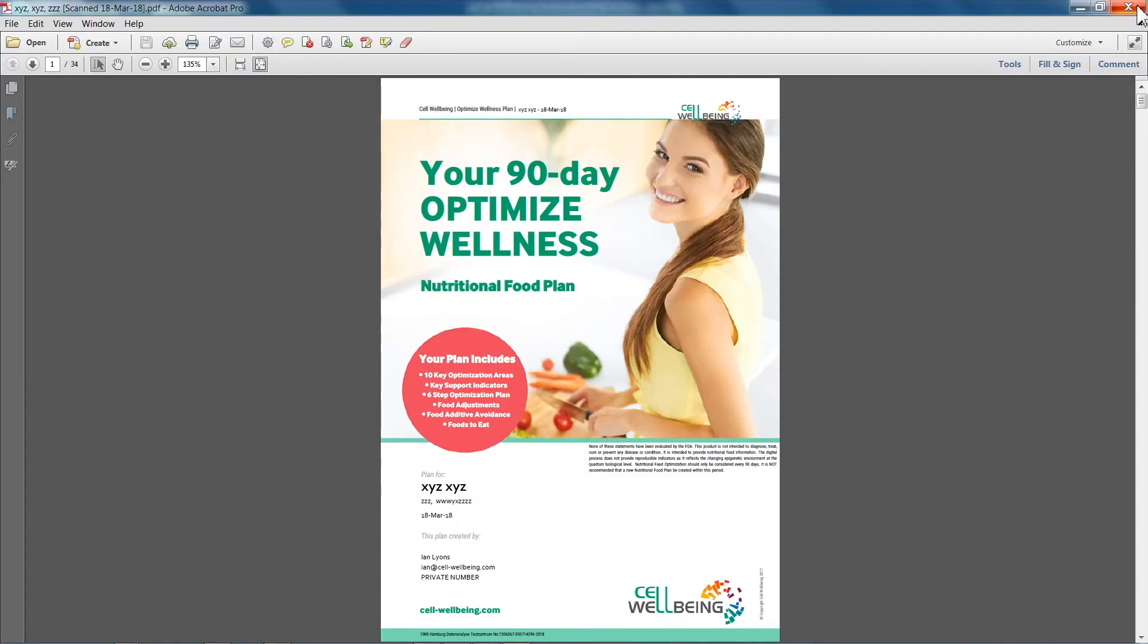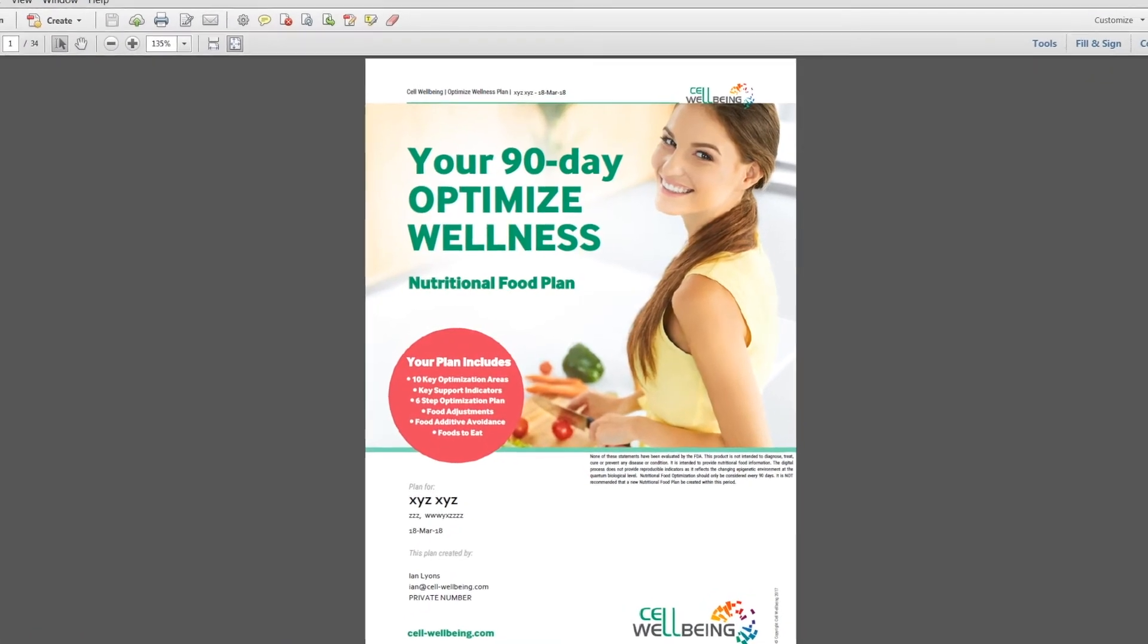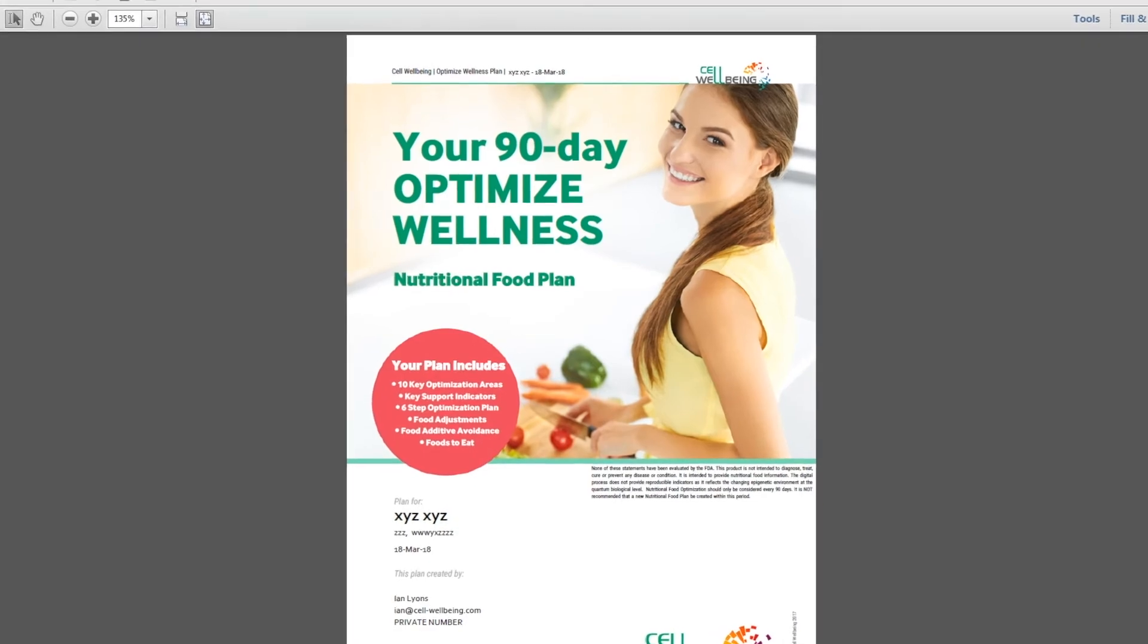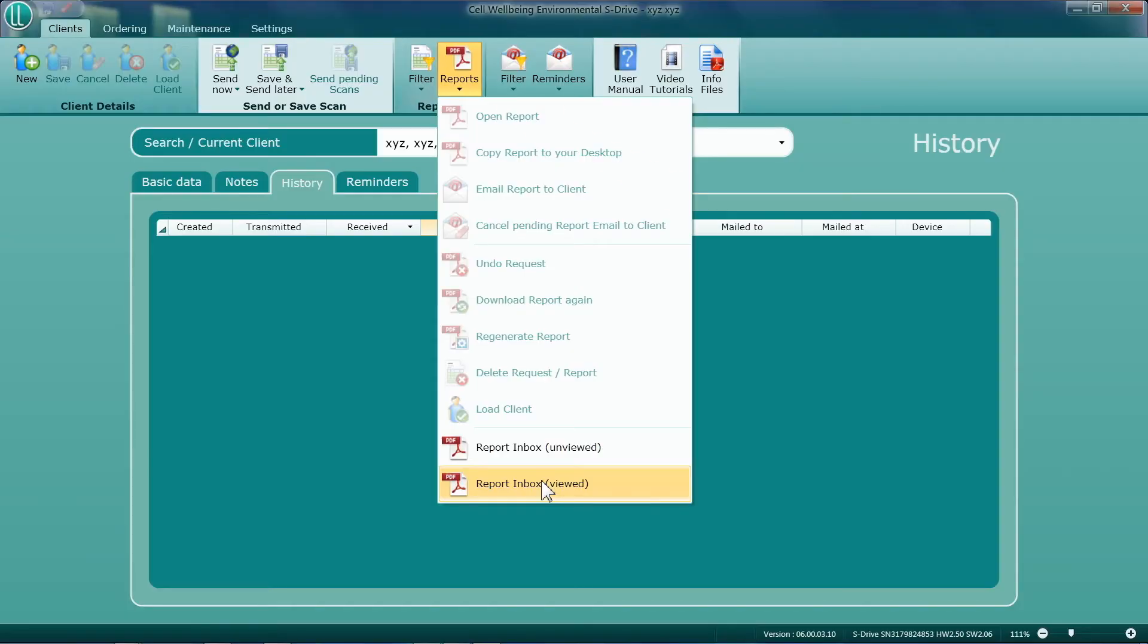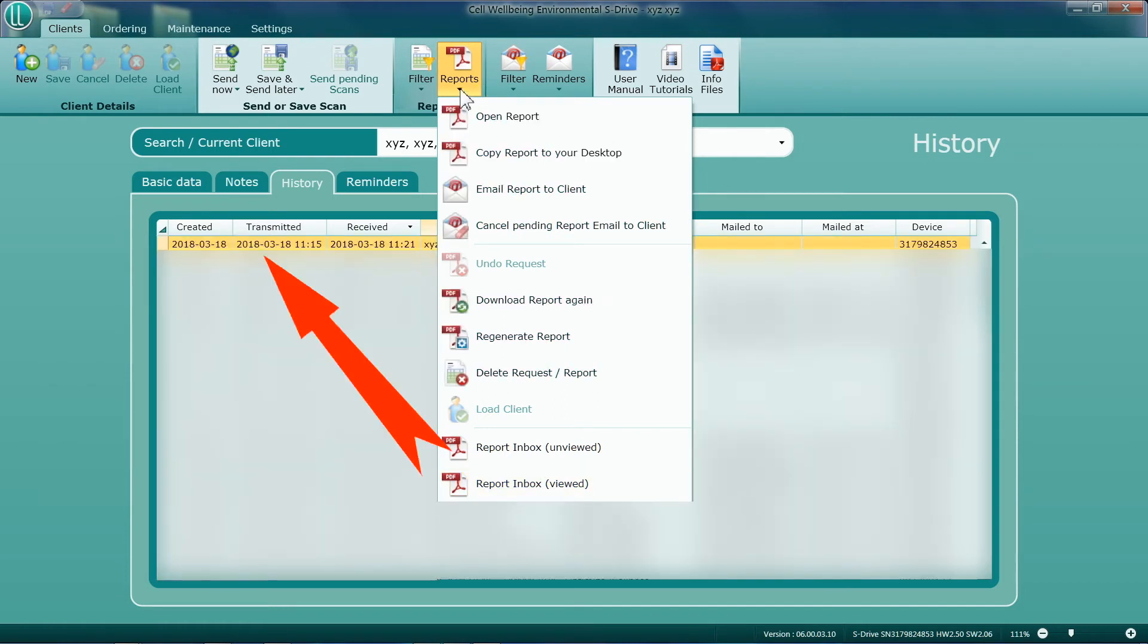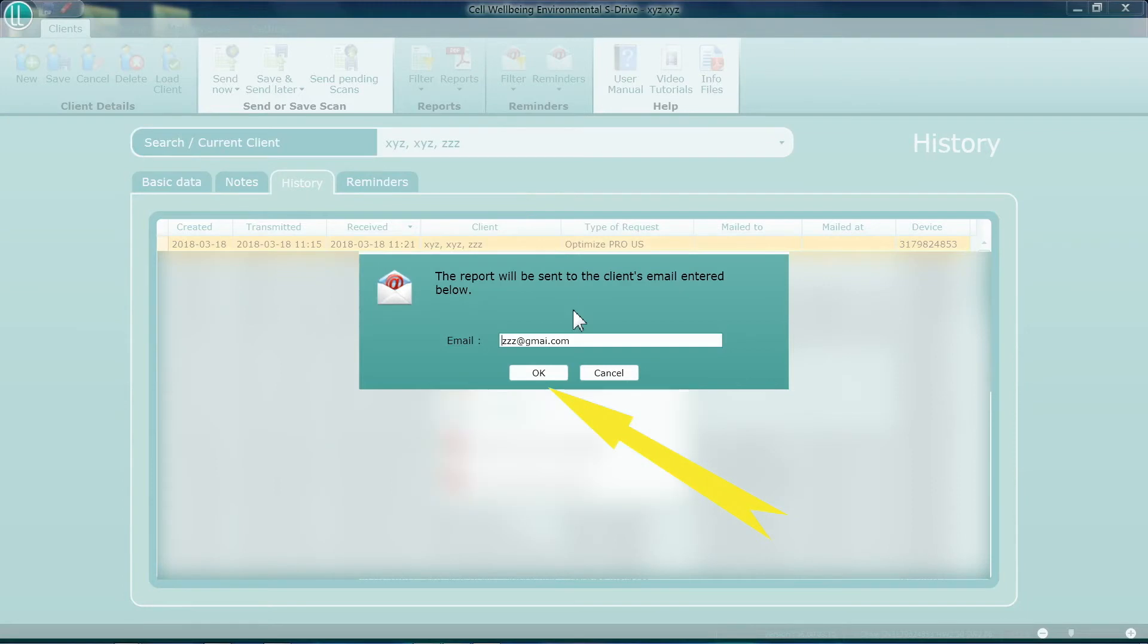The personalized report can also be sent to the client's own email address by clicking on the same report heading and scrolling down once again to Viewed Reports. Highlight the appropriate report, scroll up to the heading Email Report to Client, check the email address and then press Send.